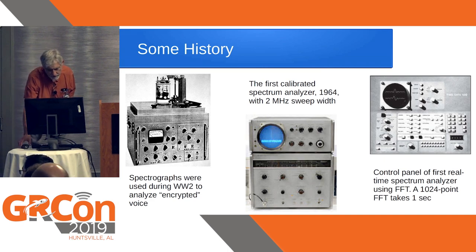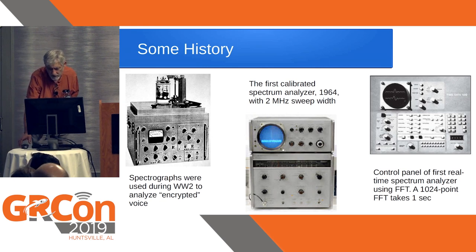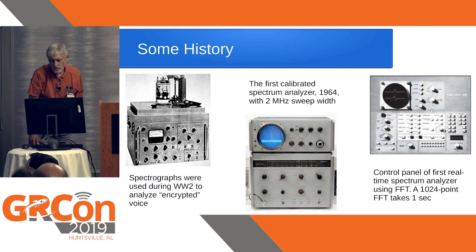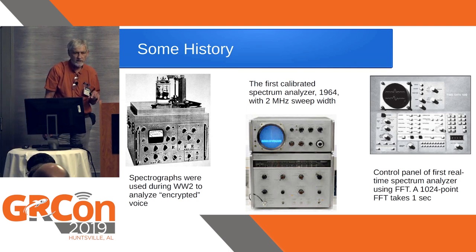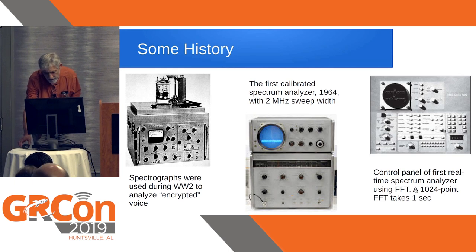This was the first calibrated two-megahertz spectrum analyzer in 1964, with a two-megahertz sweep width. This one is the control panel of the first spectrum analyzer that used the FFT for computing the spectrum — a 1024-point FFT that took one second — from 1967.